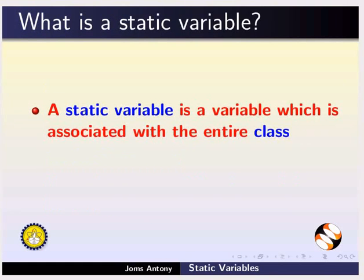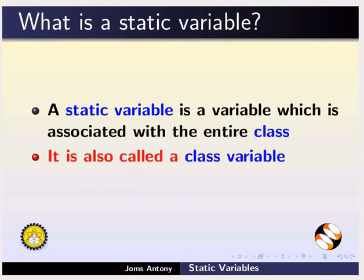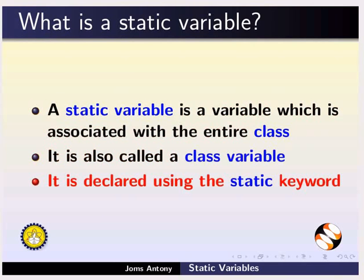A static variable is a variable which is associated with the entire class. It is also called a class variable. It is declared using the static keyword. We have seen about static variable briefly in the earlier tutorial. In this tutorial we will see it in detail.